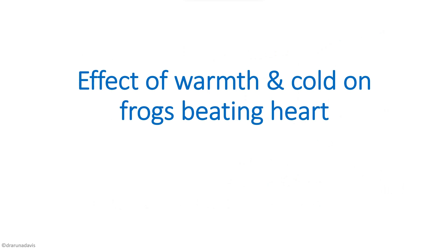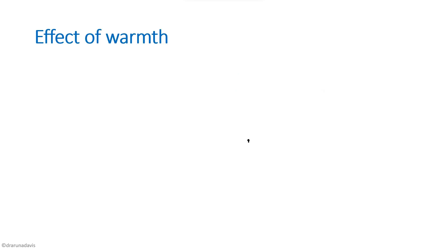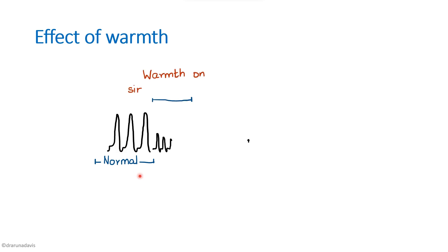The next experiment is the effect of warmth and cold on frog's beating heart. We first see the effect of warmth. Starting with the normal cardiogram, we then draw the effect of warmth on the sinus venosis. You can see that the heart rate has increased. Sinus venosis is the pacemaker, so when warmth is applied, the metabolic rate increases, the impulse rate increases, and thus the heart rate increases. Also notice that the amplitude has decreased.